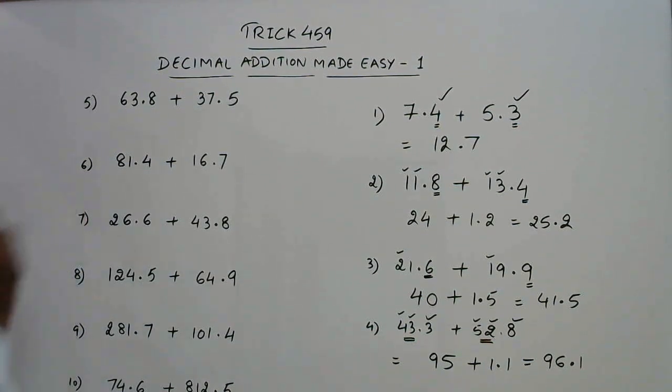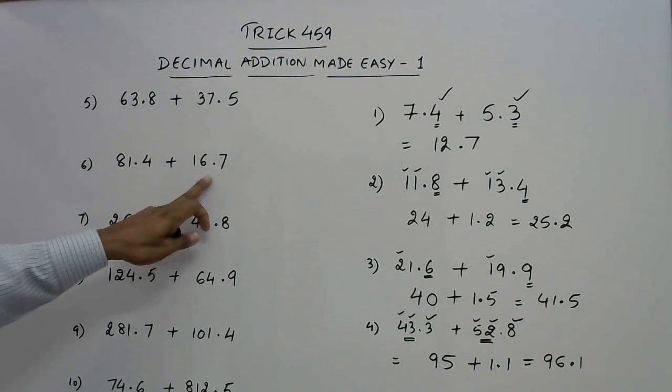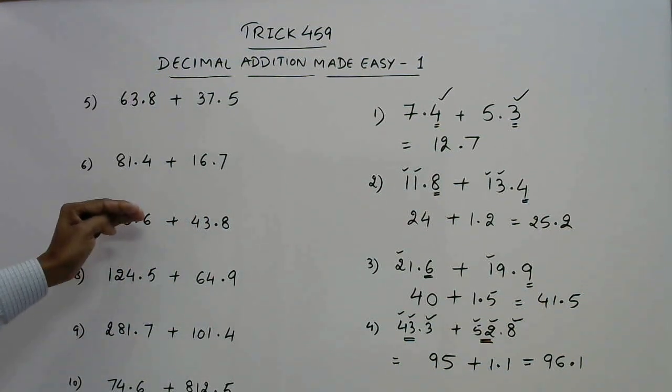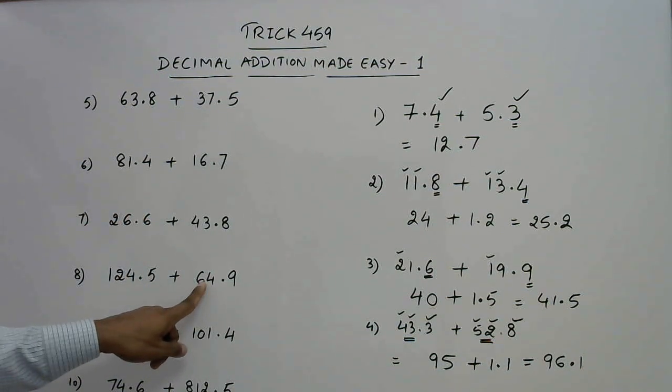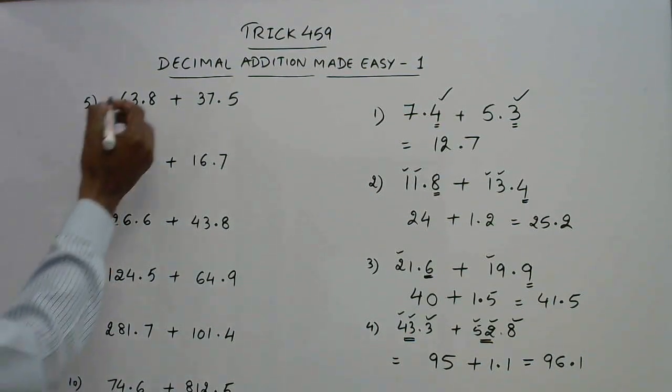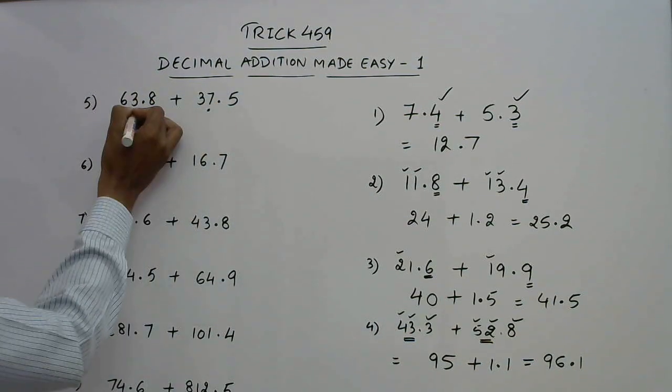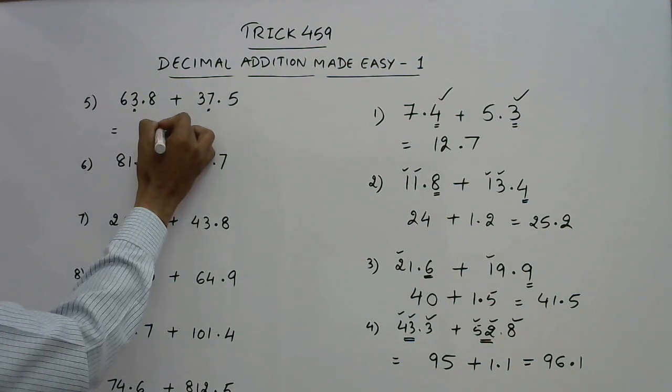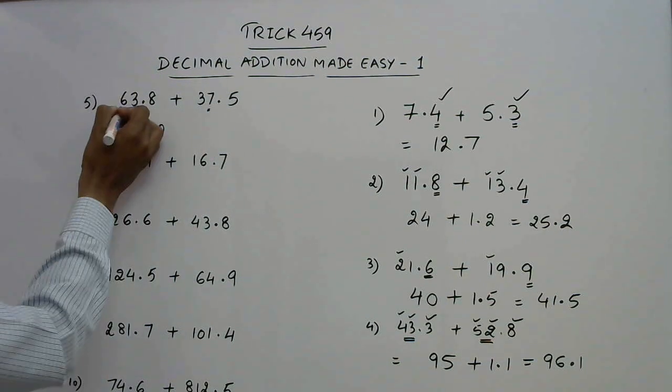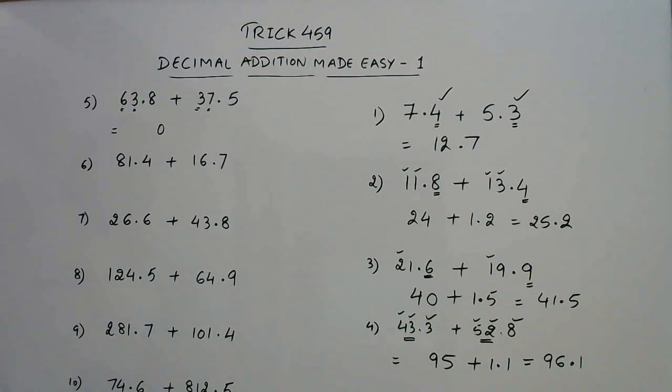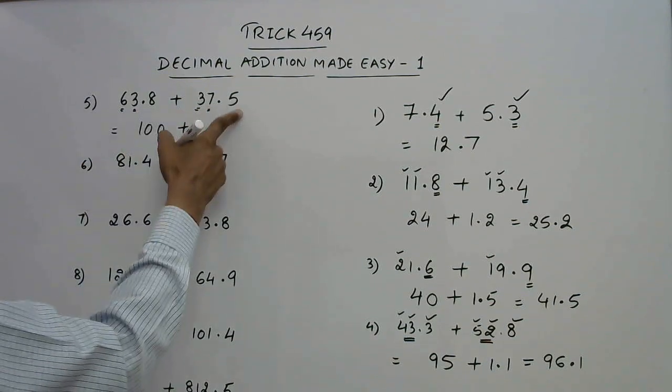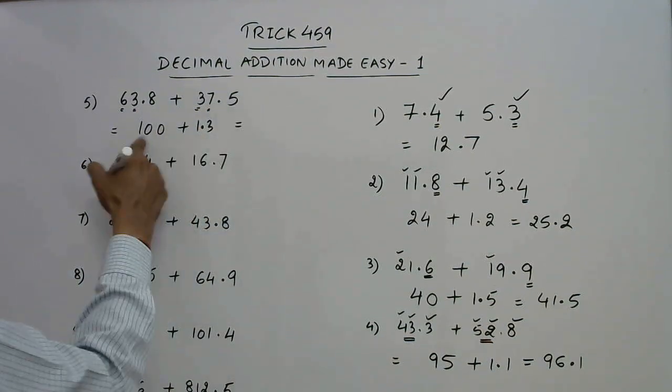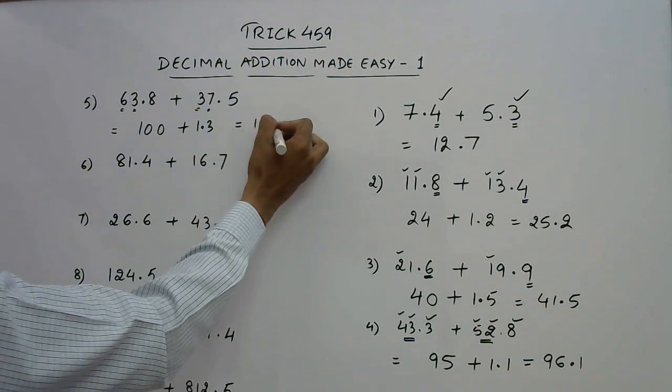Here again, I have taken examples in which the number before the decimal place is a two-digit number so that you can understand in a better way and apply it to solve questions with different numbers of digits. 3 + 7 gives you 10, so zero, one carry. 6 + 3 is 9, and one carry is 10. So it is 100 plus. Now 8 + 5 is 13, so we write 1.3, and now 101.3 is the answer.